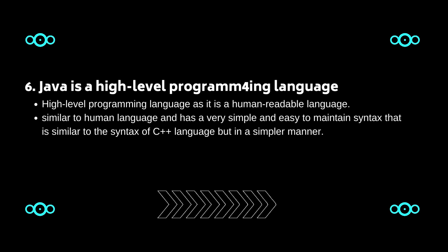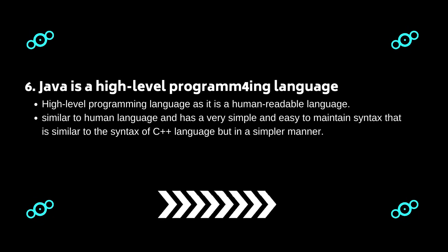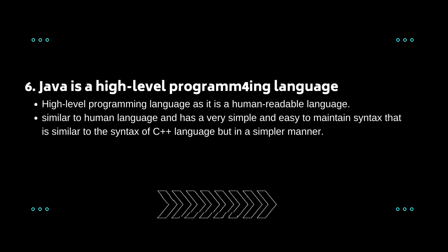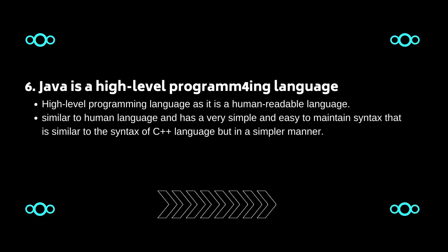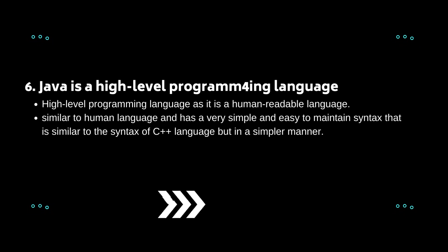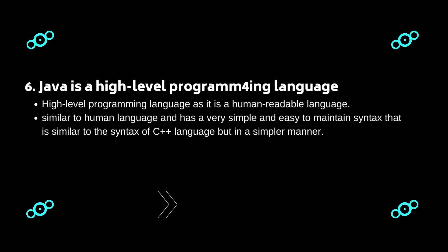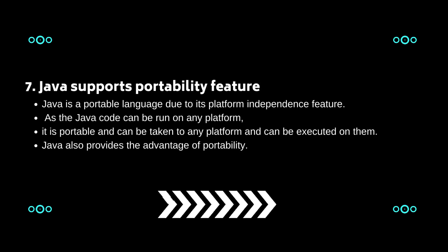Six: Java is a high-level programming language. Java is considered high-level because it is a human-readable language. It is similar to human language and has a very simple and easy-to-maintain syntax that is similar to C++ but in a simpler manner.